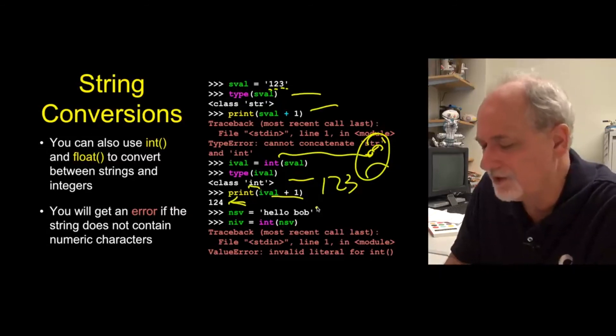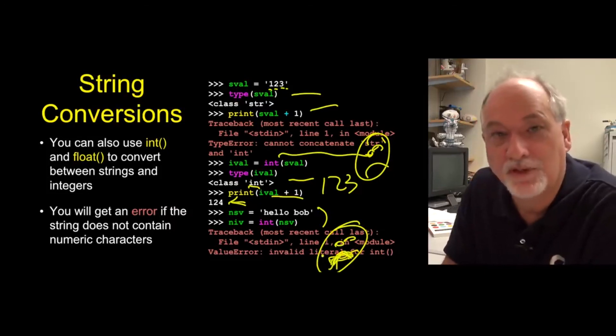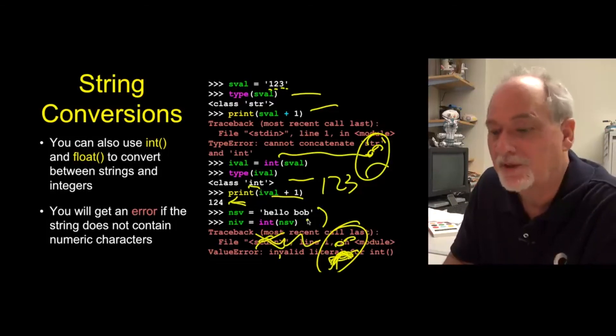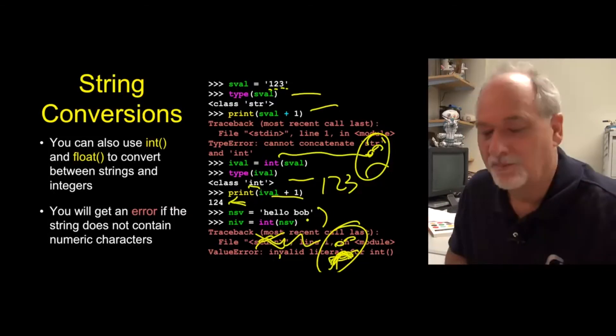And as before from this example that we're kind of reusing from a previous chapter, you don't want to try to convert something that doesn't have digits using int because it will say, I don't know what to do. And then your program quits. You don't want your program to stop. Trace backs. And you can, of course, deal with that with try and accept. But that's like a previous lecture.